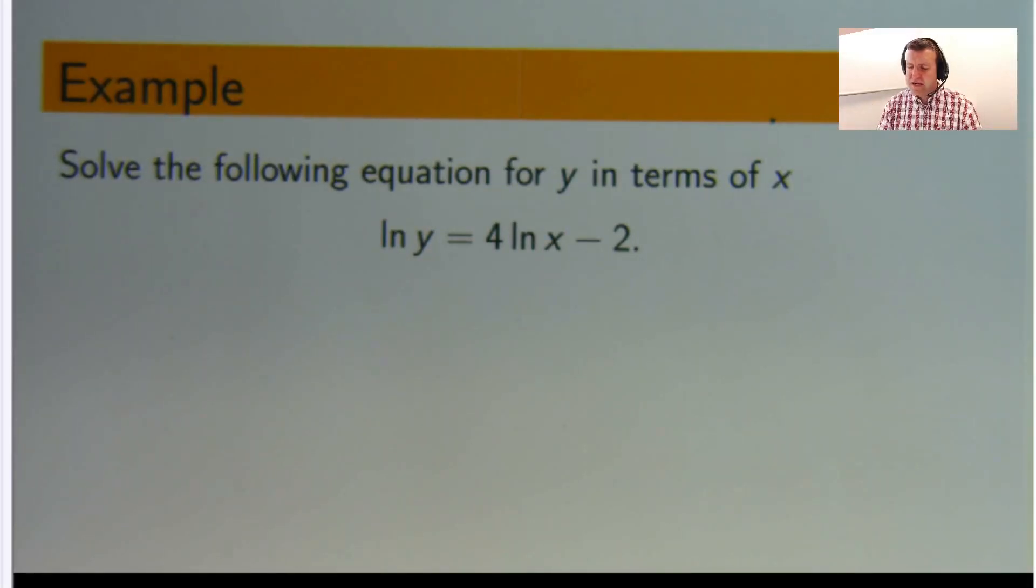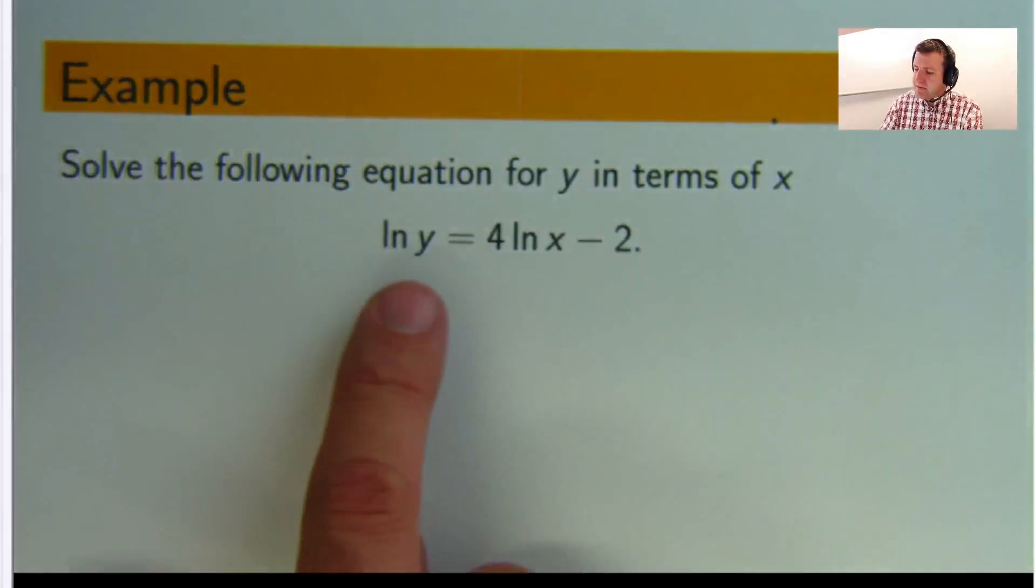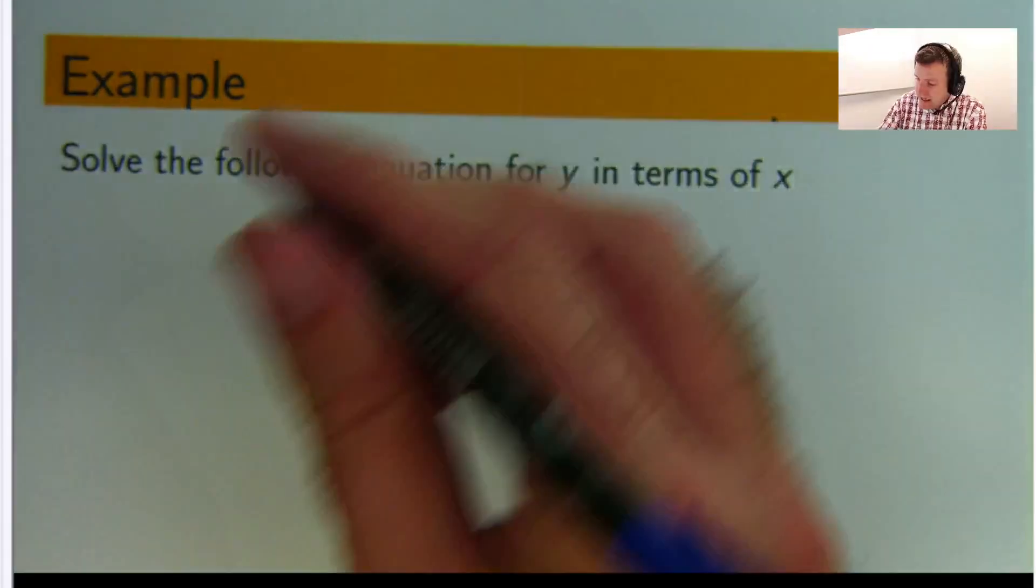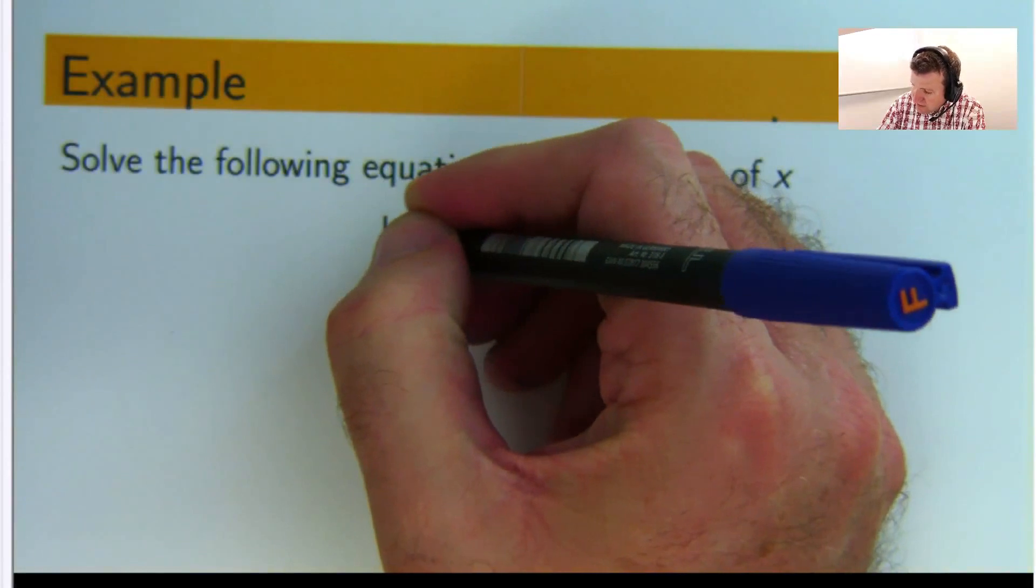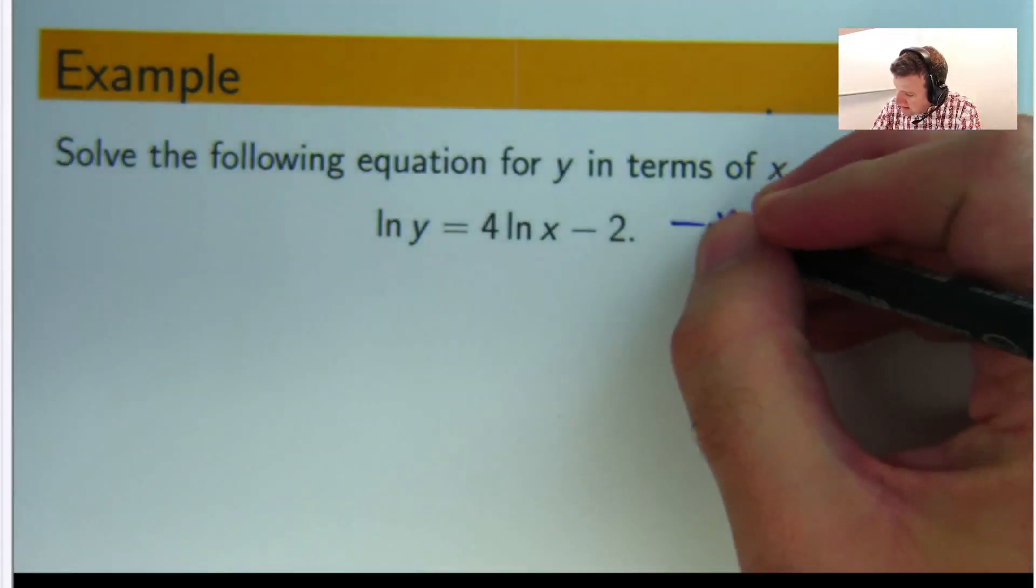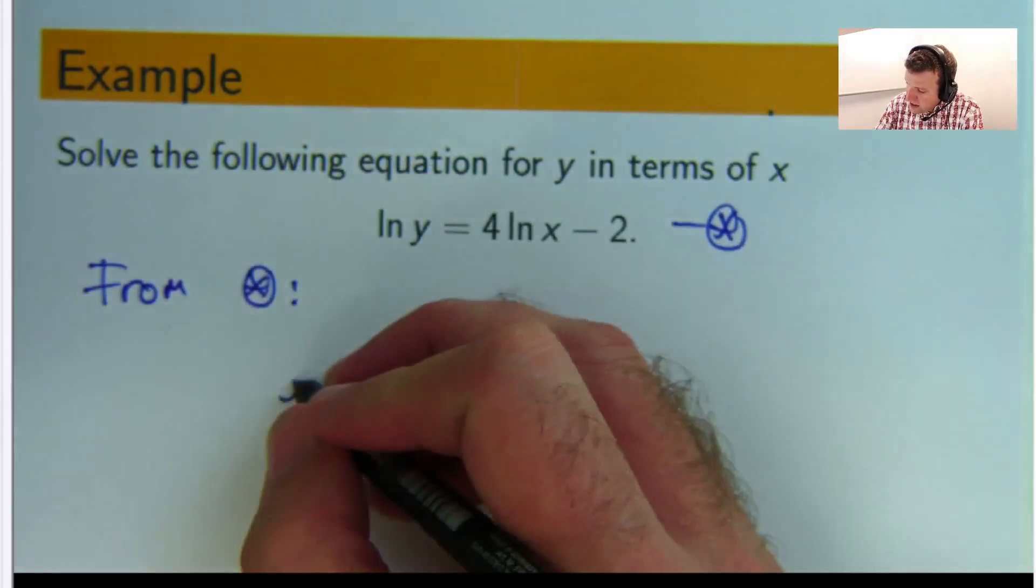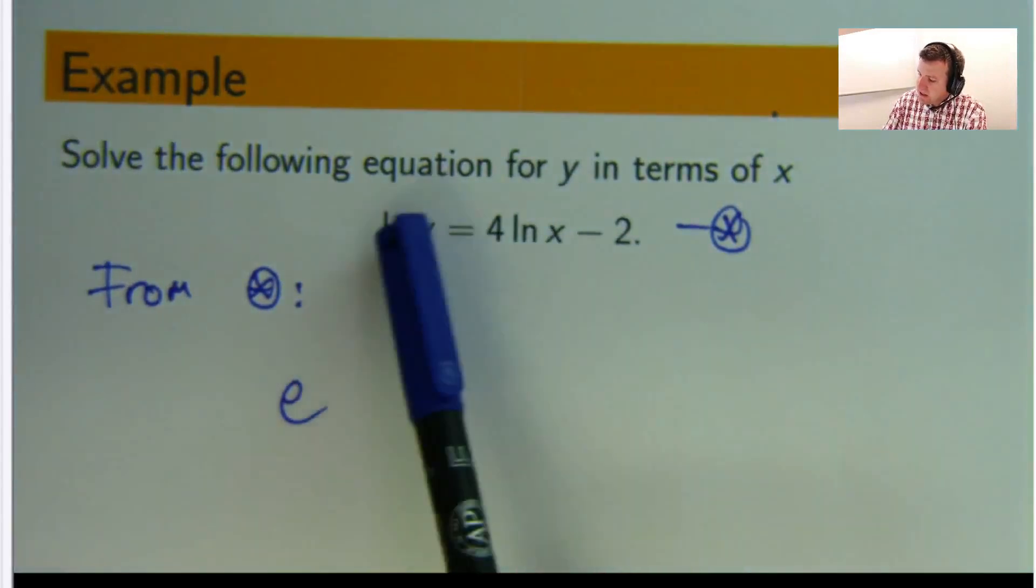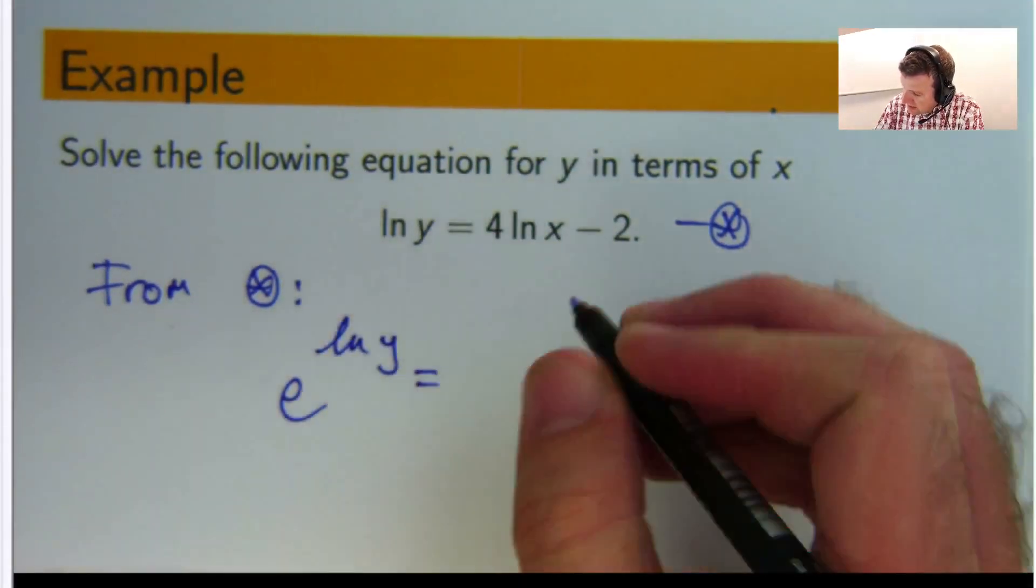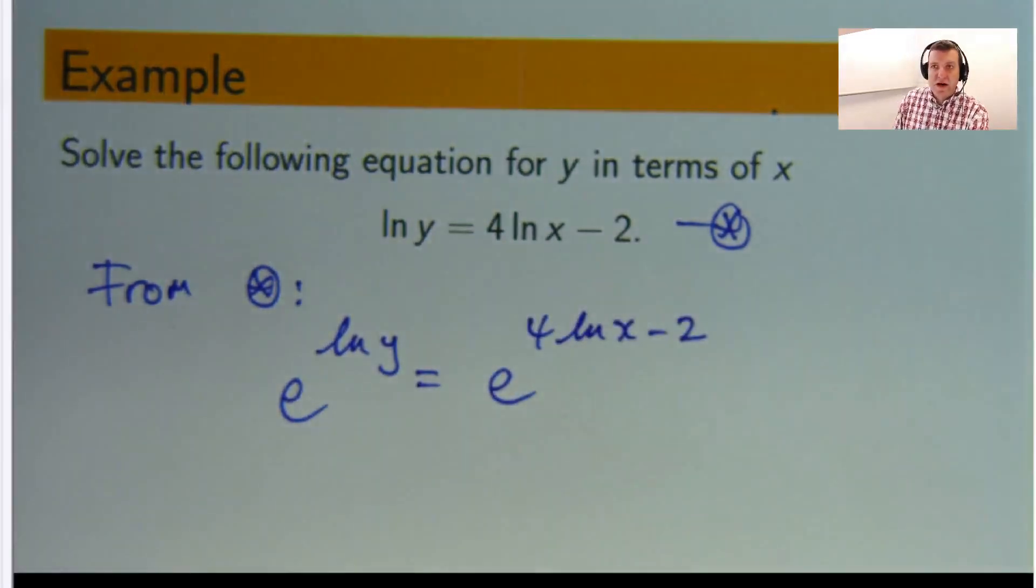So what I'm going to do, to get rid of that natural log, I'm going to make both sides the exponent with the same base, with e as the base, because you've got natural log, the base here is that magic number e. So I'm going to raise both sides e to the power of this on the left hand side, and e to the power of this on the right hand side.